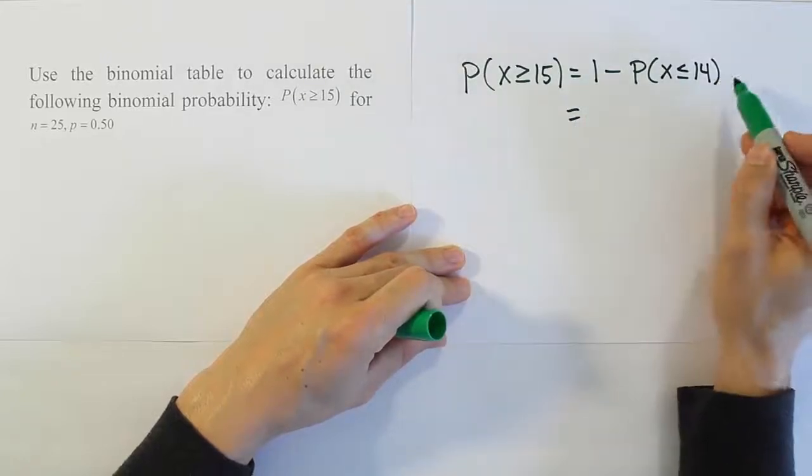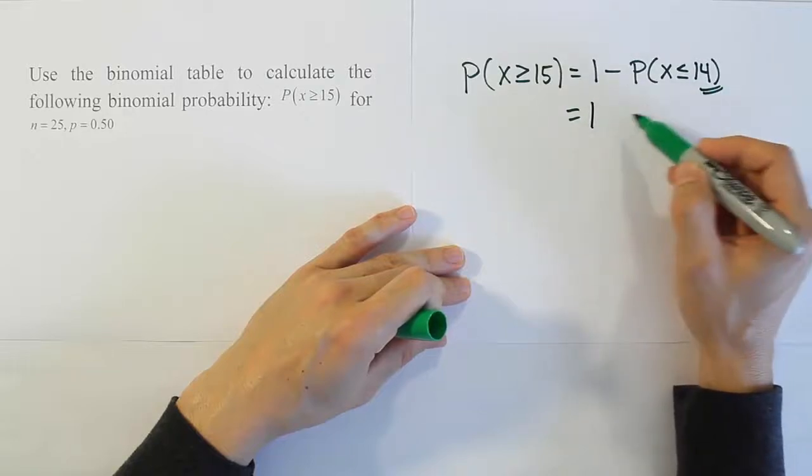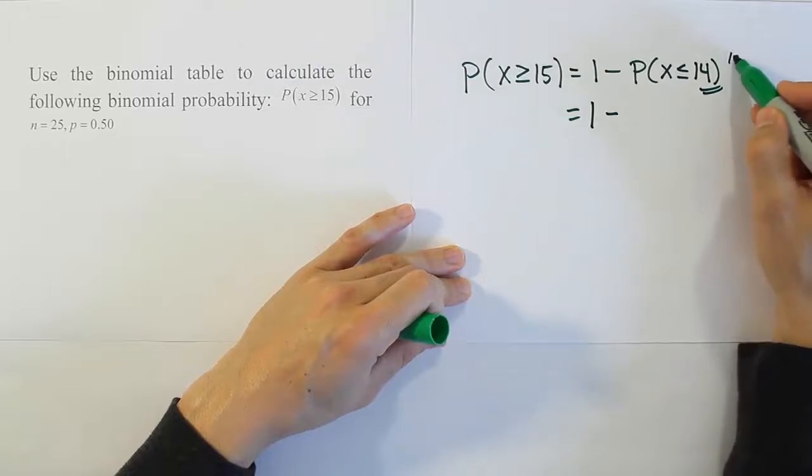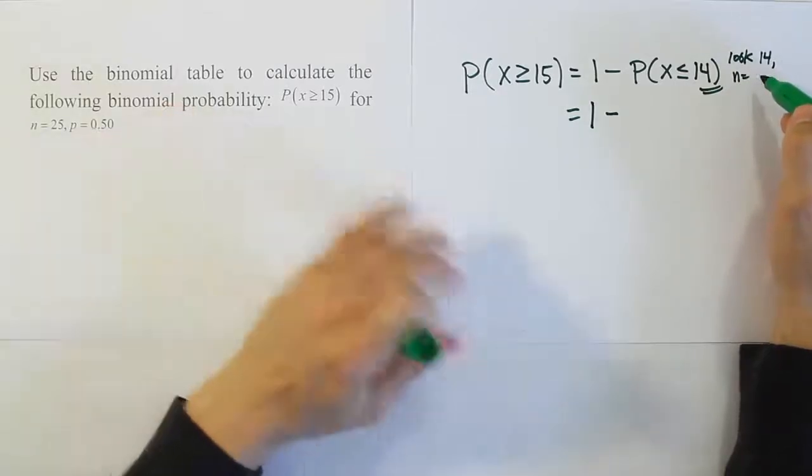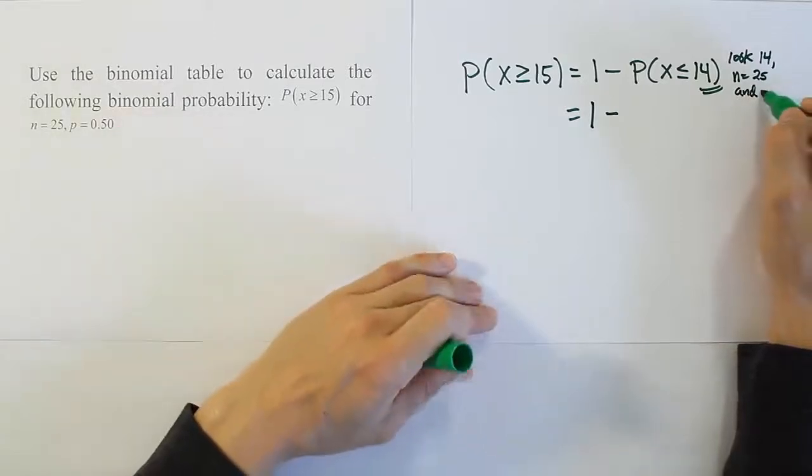Now our table does this directly. This value is the value we look up on the table, and we look that up under our corresponding parts. To get this number, we're going to look up 14, n equals 25 in this case, and because p is 0.5, p equals 0.5.